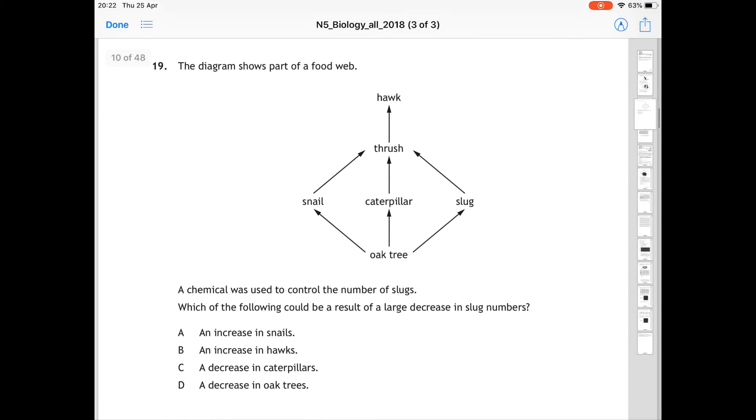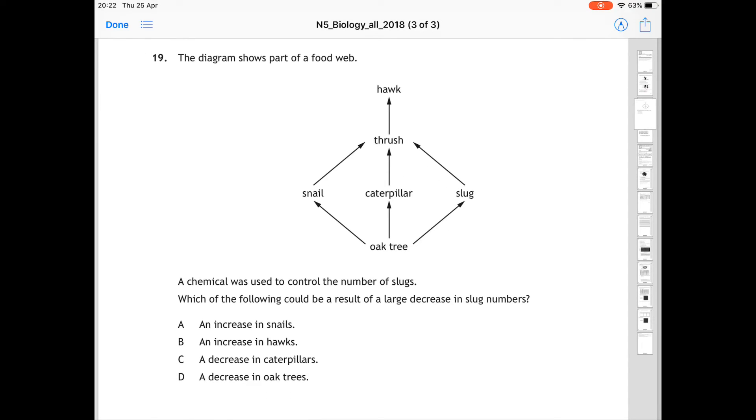Question 19 refers to this fairly simple food web. And it says a chemical was used to control the number of slugs. Which of the following could be a result of a large decrease in slug numbers? So you're looking at slugs and you're trying to figure out what would happen if that slug population decreased and what the effect would be. The correct answer here is A, an increase in snails, because if we look at the decrease in slug population, then that would mean that there would be more oak tree for snails and caterpillars to grow or the population to increase. Caterpillar is not an option here. Only snails are. So A is correct. The snails would increase.